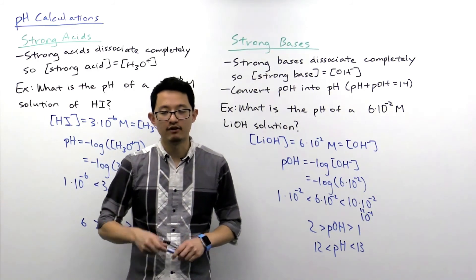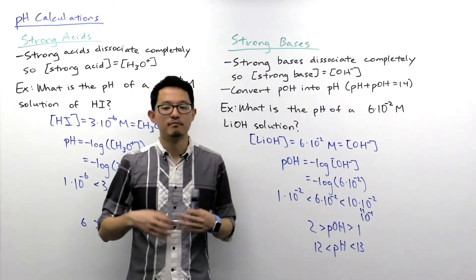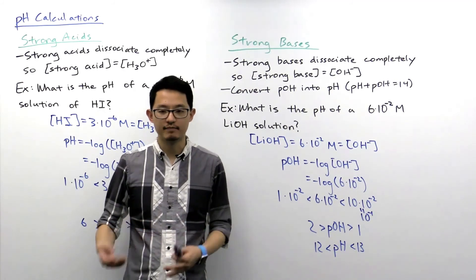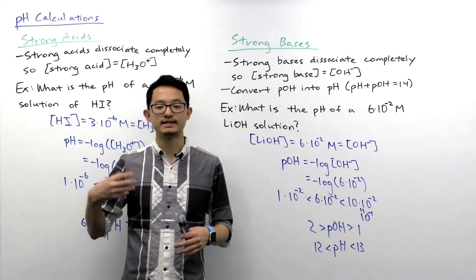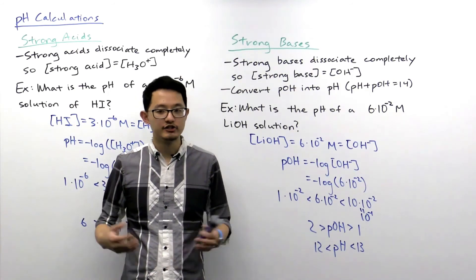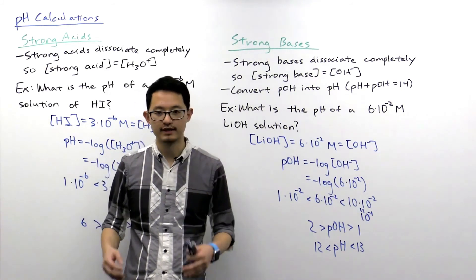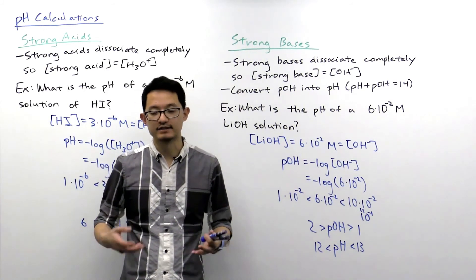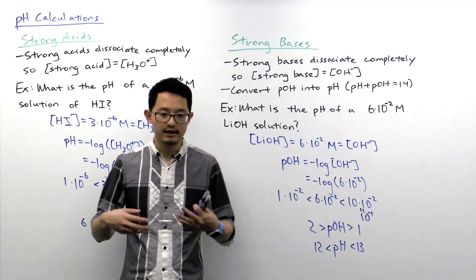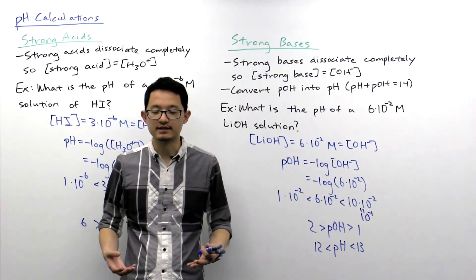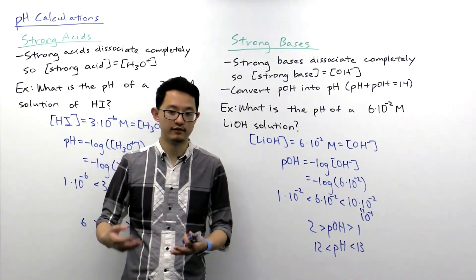One last thing to mention is that in these cases we are dealing with monoprotic acids and bases, which means each molecule only donates or accepts one proton at a time. Generally, the MCAT is not going to ask you to do pH calculations with polyprotic acids and bases because the calculations get more complicated. Or if they did, in some of those cases you would only have to focus on the dissociation of the first proton.